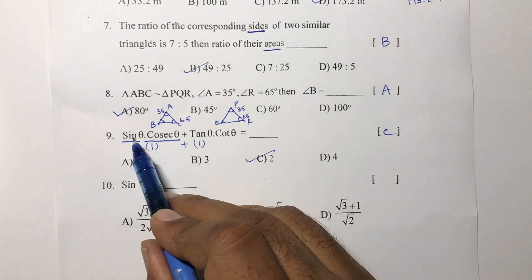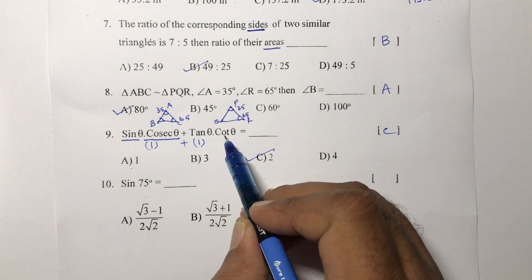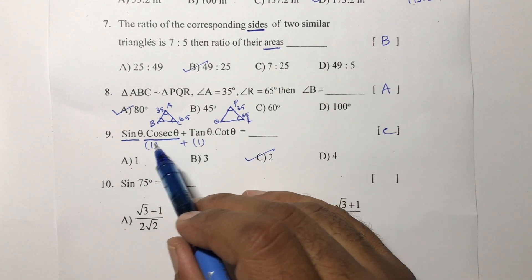Because sine is opposite by hypotenuse, cosec is hypotenuse by opposite. In the same way, tan is opposite by adjacent, cot is adjacent by opposite. We get 1 for this, 1 for this, 1 plus 1 equals 2.